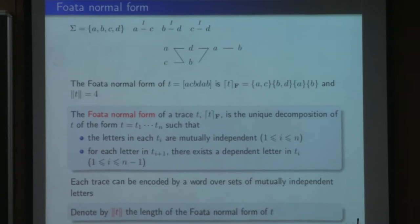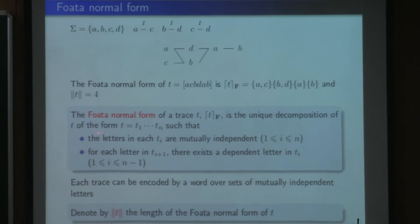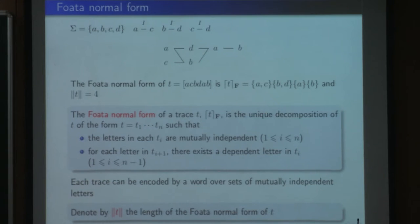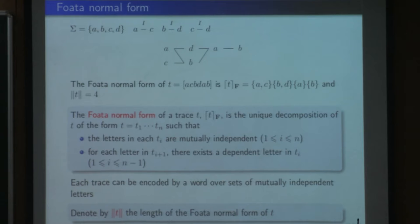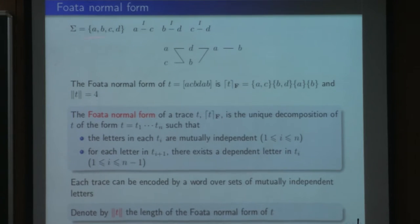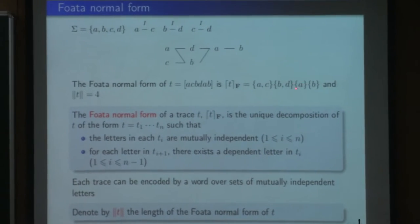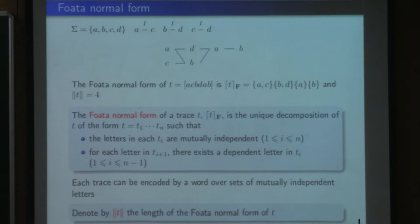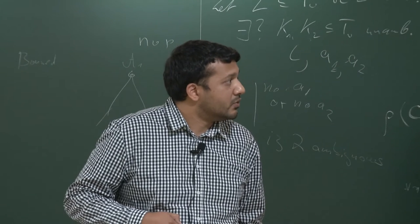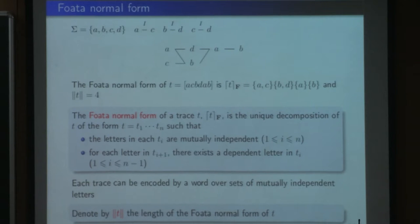A crucial notion in the paper is that any trace admits a normal form called its Foata normal form. Any trace admits a unique decomposition level by level, such that all letters in a given level are mutually independent, and any letter in a given level is dependent on a letter in the previous level. For example, given a dependence alphabet, we can consider a trace encoded as the word AC, then BD, then A, then B — four levels. The length of a trace is the length of its Foata normal form seen as a word, so here the length is four.